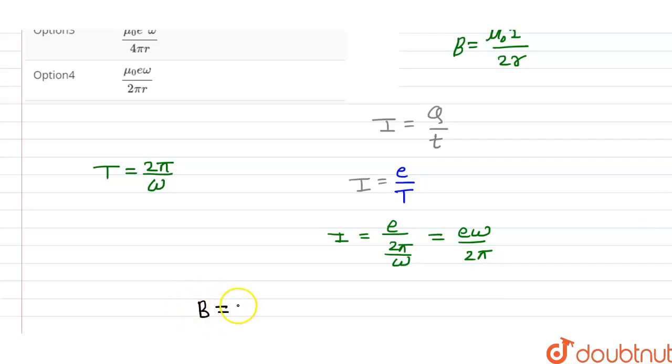Magnetic field B is equal to μ₀ divided by 2r. There's an area, and I write you will get area eω divided by 2π. So now we have μ₀eω divided by 4πr.